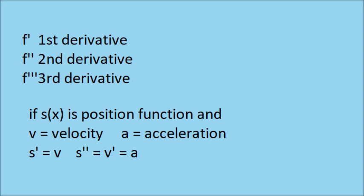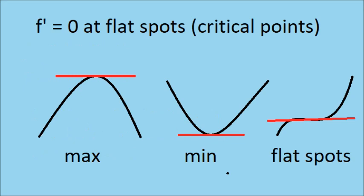If s is your position function, then the derivative of your position function is your velocity function. The second derivative of your position function is the derivative of your velocity function, which is also equal to the acceleration function. The slope and the first derivative are equal to 0 at flat spots, which are usually local minimums or local maximums, or just critical numbers that are neither local min or local max.